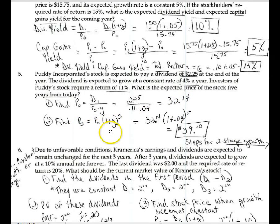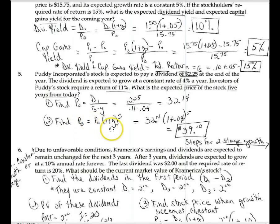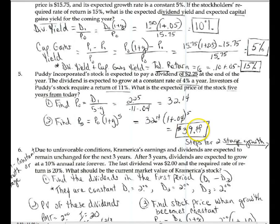On the equation sheet I made available to you, the expected future stock price equation states P sub N equals P sub zero times one plus the growth rate to the power of N. It's derived from a piece of the Gordon model. The math behind the Gordon model makes it useful in so many respects with stock valuation. Given the price today of $32.14, you take that times one plus the growth rate to the fifth power — because we're looking at the stock price in five years — and you get $39.10.